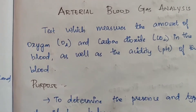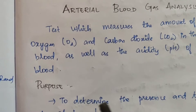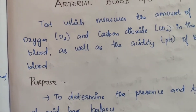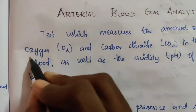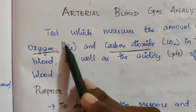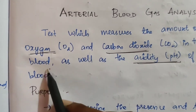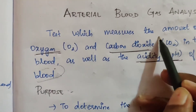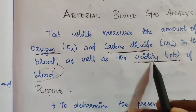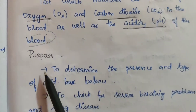First, introduction. Arterial blood gas analysis is a test which measures the amount of oxygen and carbon dioxide in the blood, as well as the acidity of the blood. We measure the amount of oxygen and carbon dioxide in the blood and find the acidity of the blood. This is the purpose of arterial blood gas analysis.